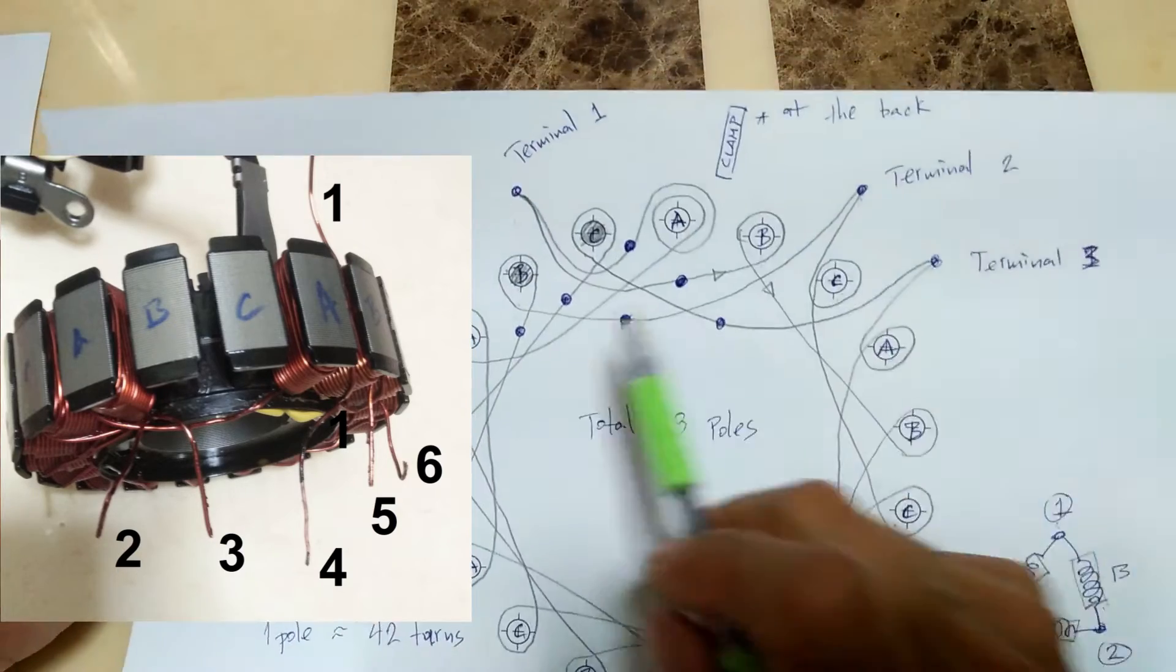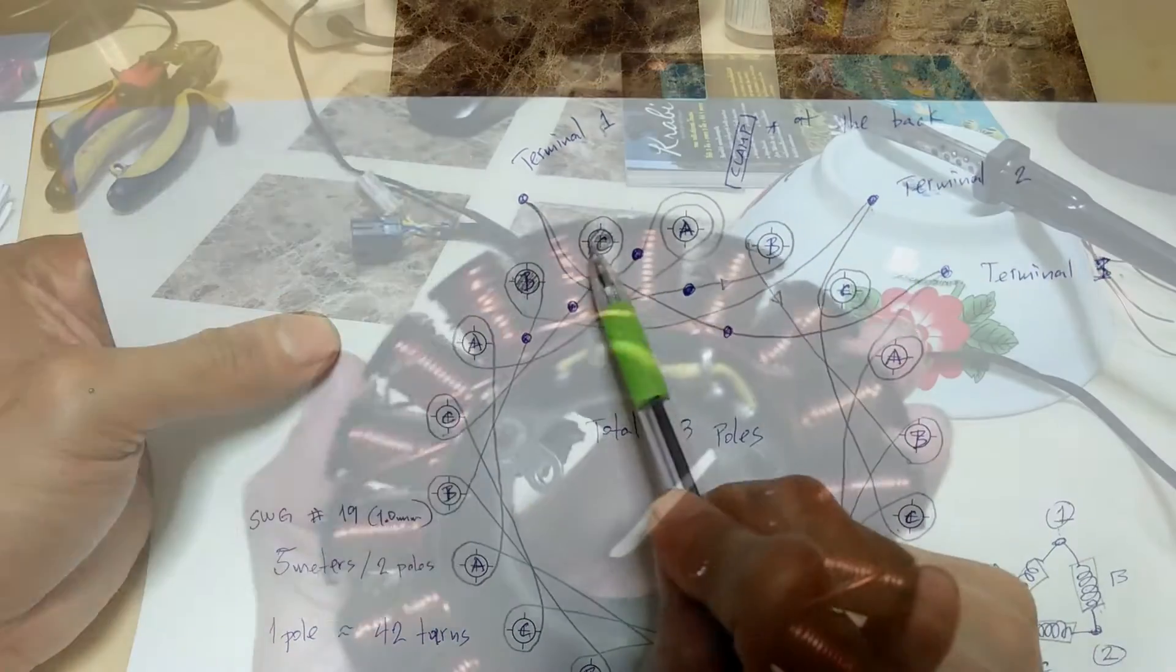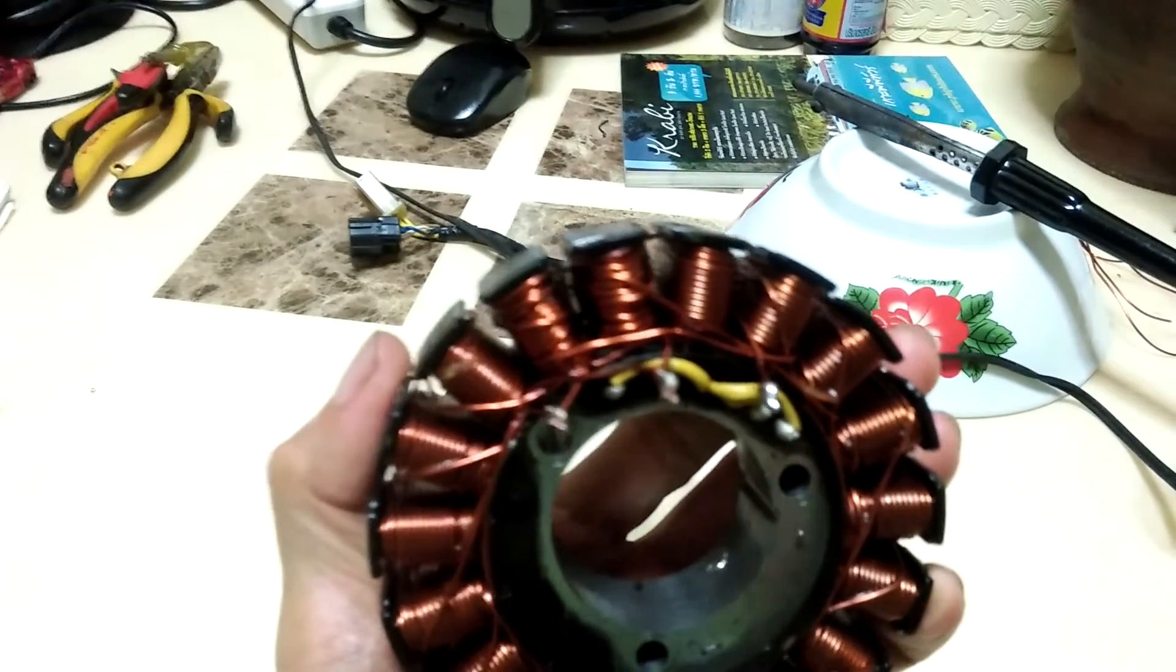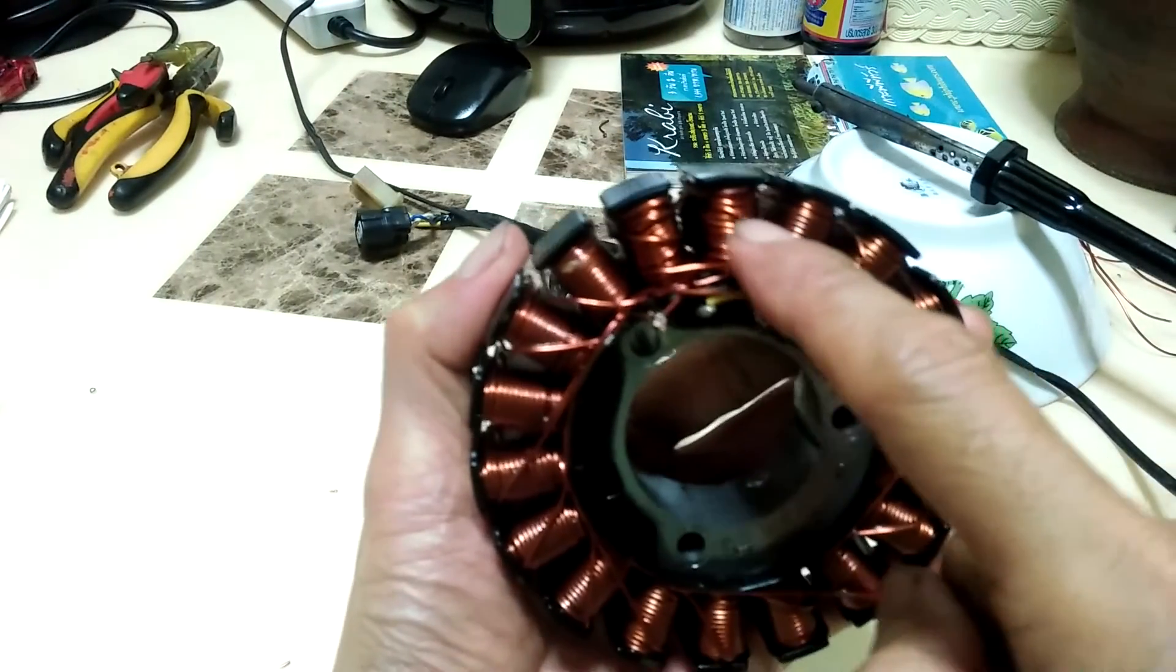Three of those wire ends solder directly to each of the three terminals. The other three wire ends are shown here spliced and soldered connected to existing wires of the stator.